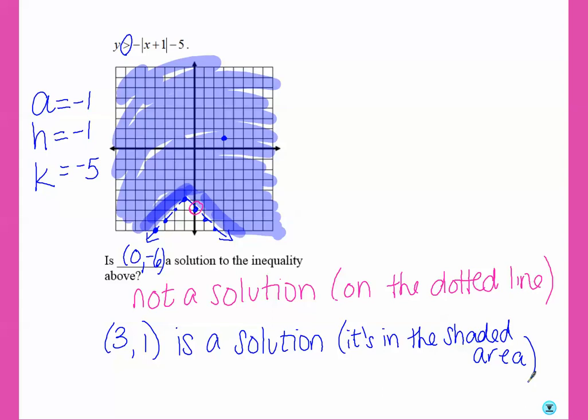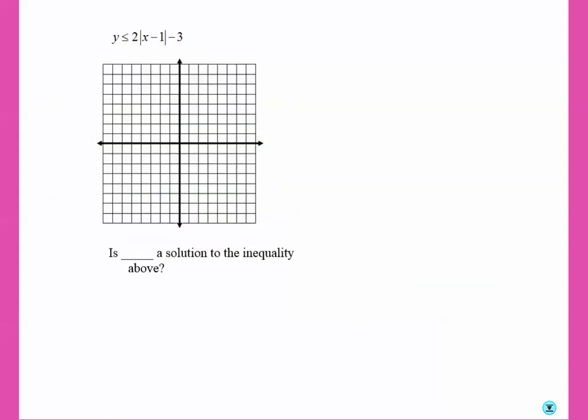So let's look at another example. Y is less than or equal to 2 times the absolute value of x minus 1 minus 3. So we're still using a, h, and k. So we're going to start at 1, negative 3. And then since a is 2, we're going to go up 2 over 1 on both sides of our v.